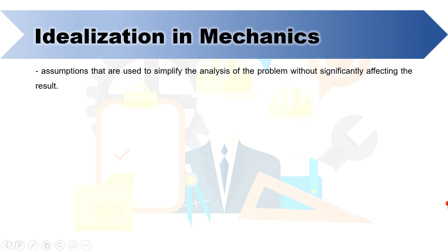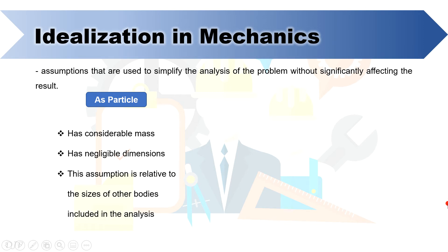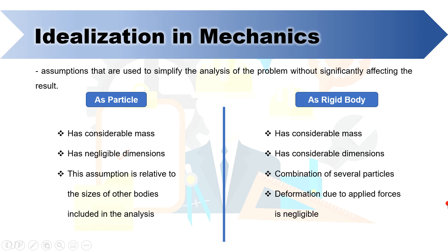First is the idealization in mechanics. Idealization in mechanics simply means assumptions that are used to simplify the analysis of the problem without significantly affecting the result. One of those idealizations is the particle. When we say as particle, we mean an entity having considerable mass but negligible dimension.